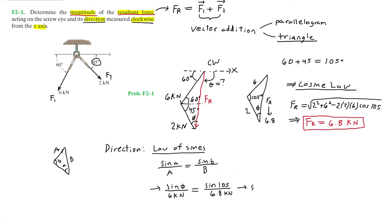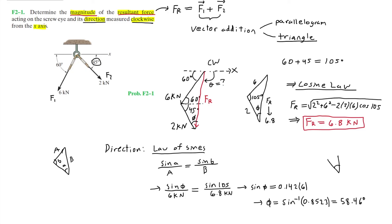Moving the 6 kilonewtons to the right side to solve for φ: the right side equals 0.142 times 6 kilonewtons. Isolating φ, we take the arc sine of 0.8523, which gives us φ equals 58.46 degrees. So the angle at this section of the triangle is roughly 58.5 degrees.